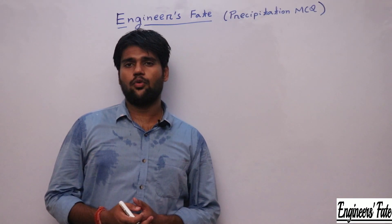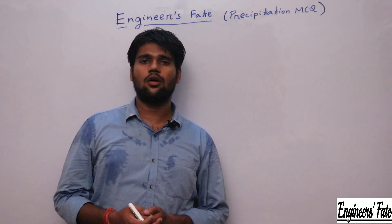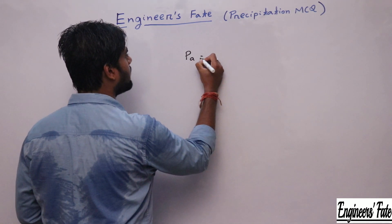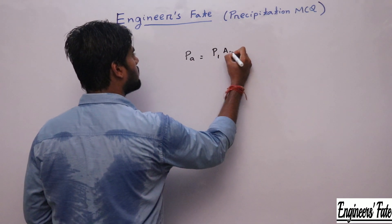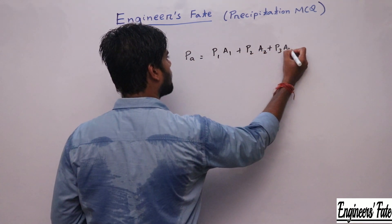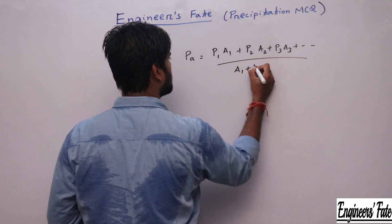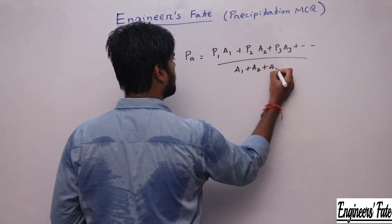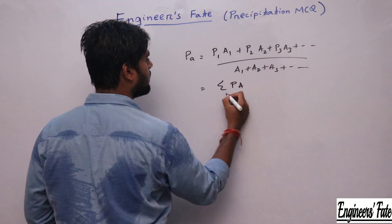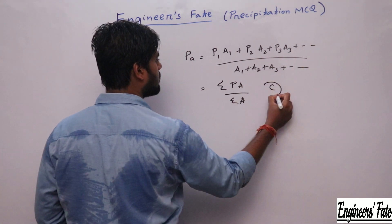This question asks about the weighted mean method. In the Thiessen polygon method, we use the weighted mean: P̄ = (P1·A1 + P2·A2 + P3·A3 + …) / (A1 + A2 + A3 + …), which equals ΣPA / ΣA. So the option is option C.